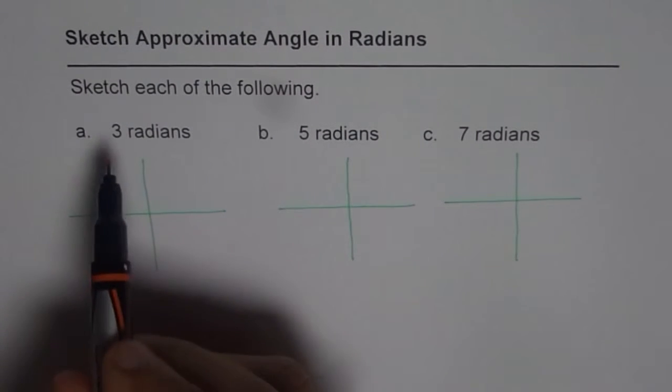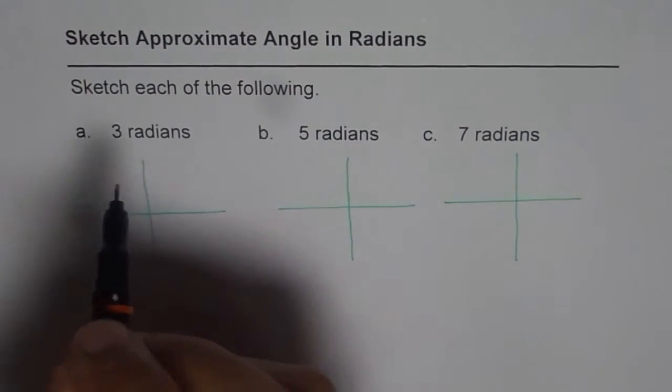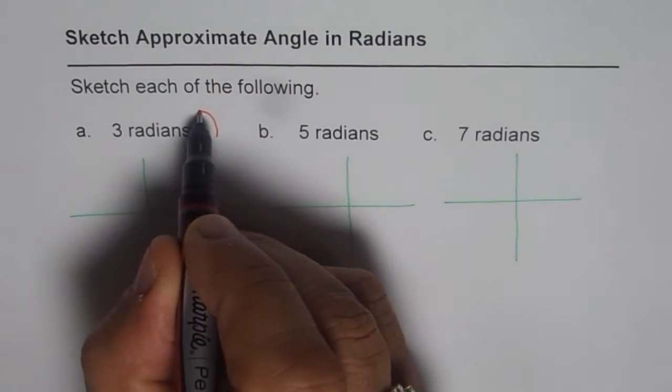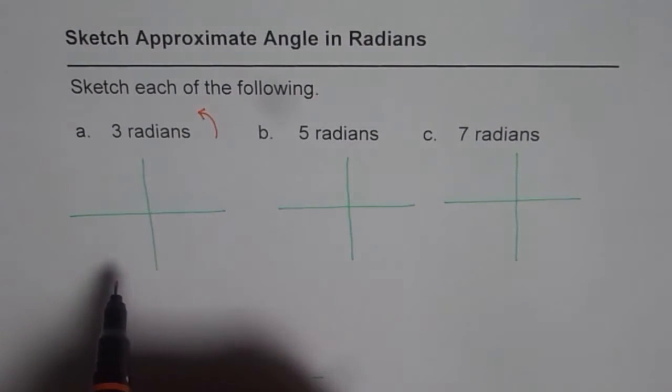Now 3 radians. When we say plus 3 that means the angle is counter-clockwise, right. 3 radians means how much. Now what is the value of π?